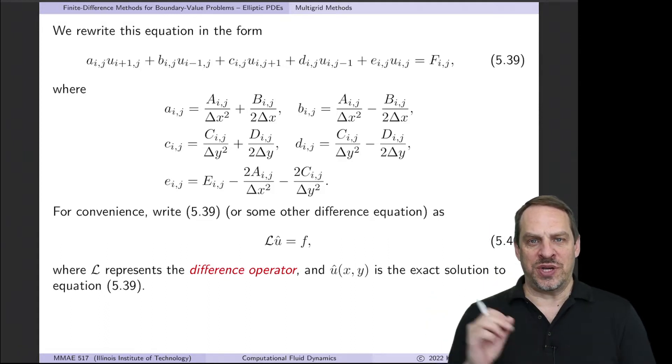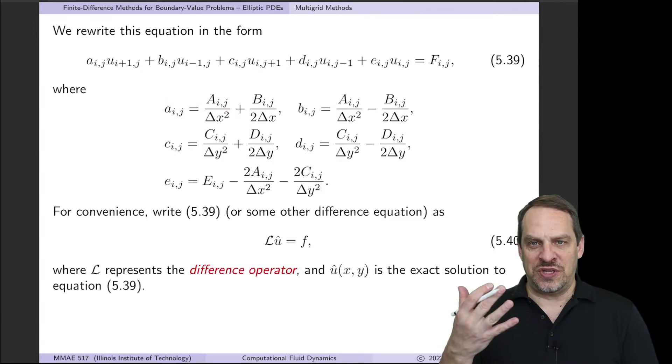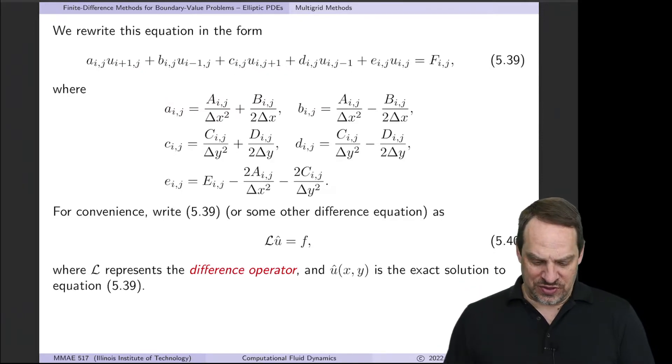The point itself, north, south, east, and west. And we're going to represent this in the shorthand. L operating on u hat is equal to f. U hat here will be the exact solution to this differential equation. L is the difference operator, everything operating on u on the left-hand side. So whenever you see the L, just imagine this difference operator.